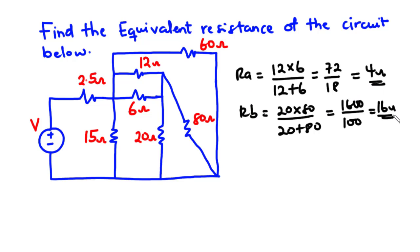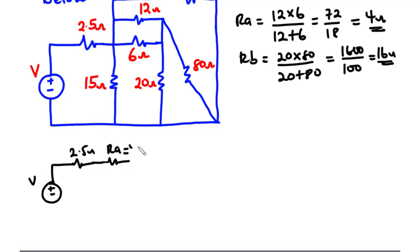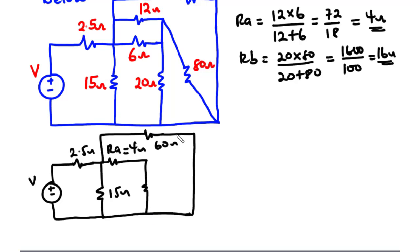We can now redraw the circuit. We have the voltage source, then 2.5 ohms, then Ra which is 4 ohms, then 15 ohms, then 60 ohms, and then Rb which is 16 ohms.